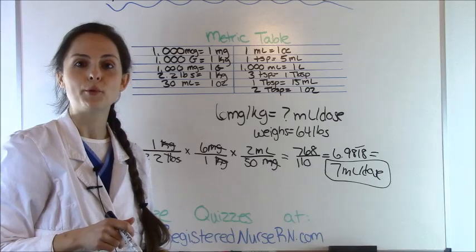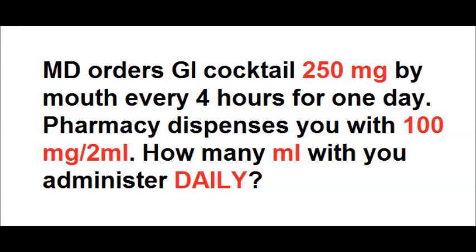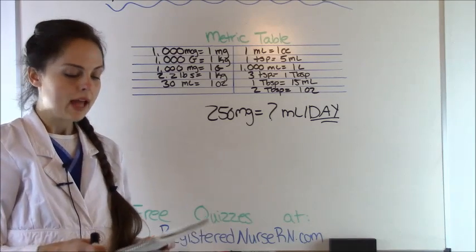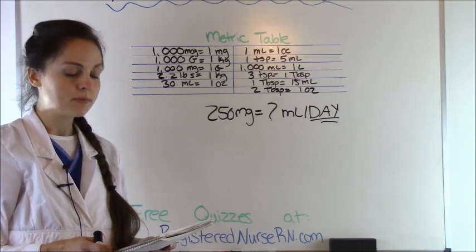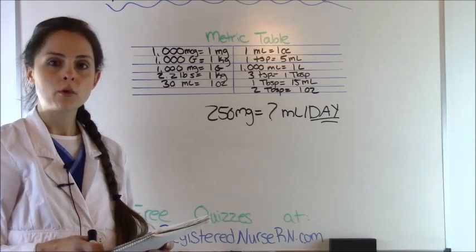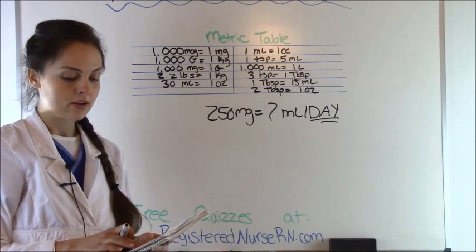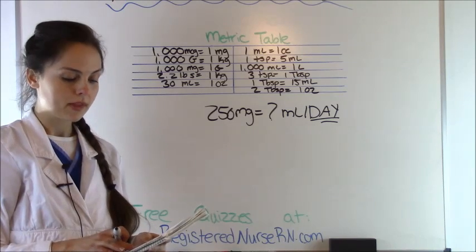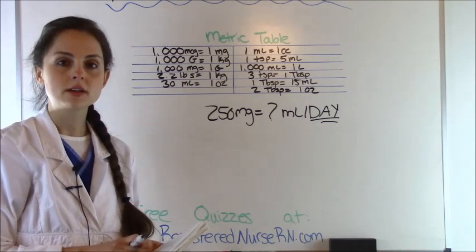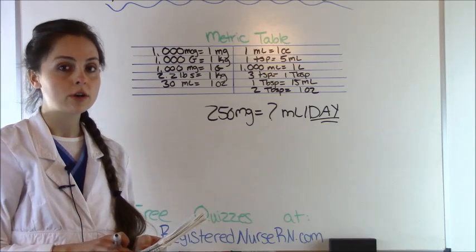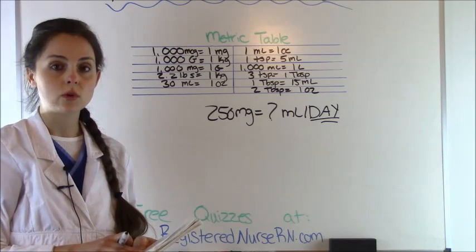Now let's move to problem four. MD orders GI cocktail 250 milligrams by mouth every four hours for one day. The pharmacy dispenses you with 100 milligrams per two mLs. How many milliliters will you administer daily? For problem four, the doctor ordered a GI cocktail 250 milligrams by mouth every four hours for one day. The question asks how many mLs per day — this is not a per dose question, so you have to pay attention to the wording.